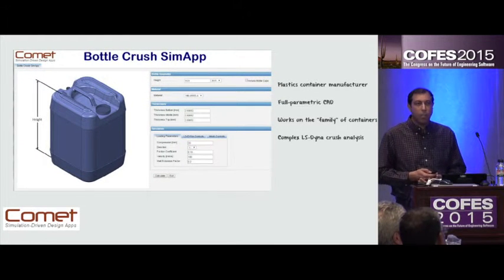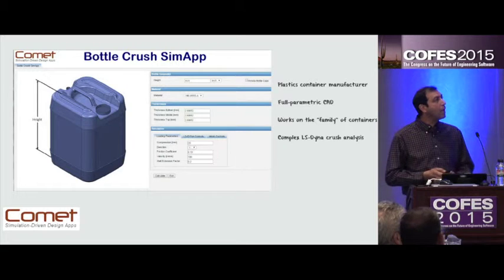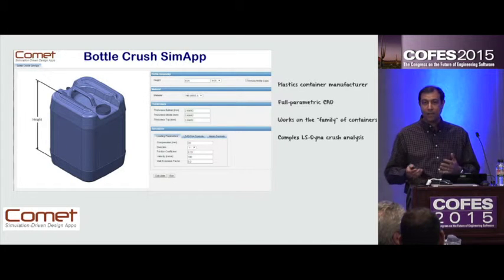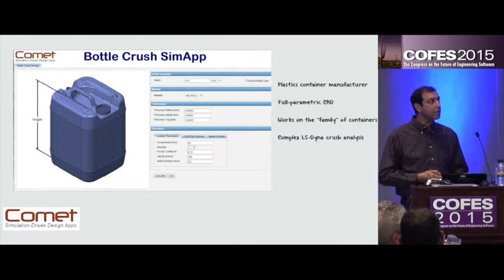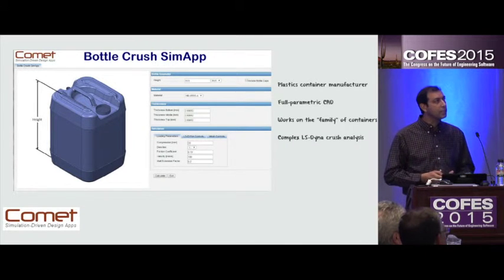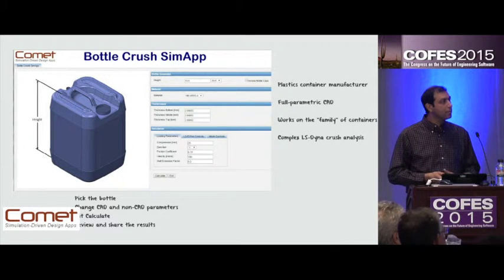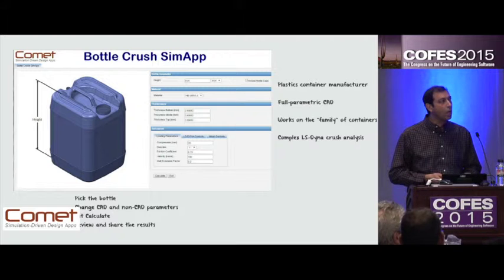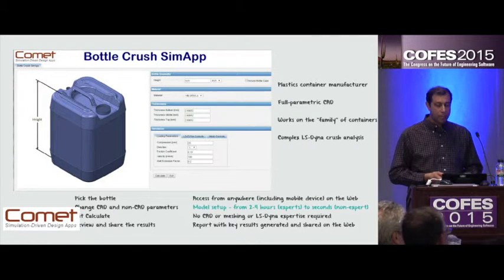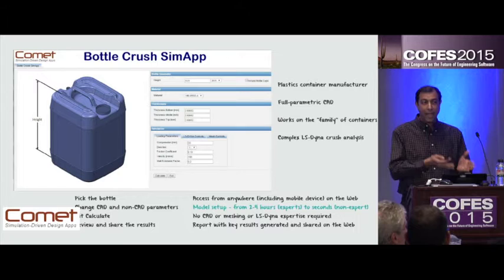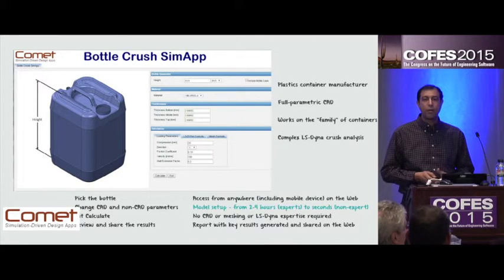Let's look at a couple more examples. A bottle crush application used by a plastics container manufacturer. Libraries of fully parameterized CAD — or you can bring your own CAD — works on the entire family of containers and runs complex LS-DYNA impact calculations. The user picks the bottle, changes CAD and non-CAD parameters, and hits calculate. Reviews key results and shares them with colleagues. Accessible from anywhere on the web, model setup time goes from two to four hours using experts who know CAD, meshing, and LS-DYNA, down to seconds or minutes with a non-expert safely running these calculations.